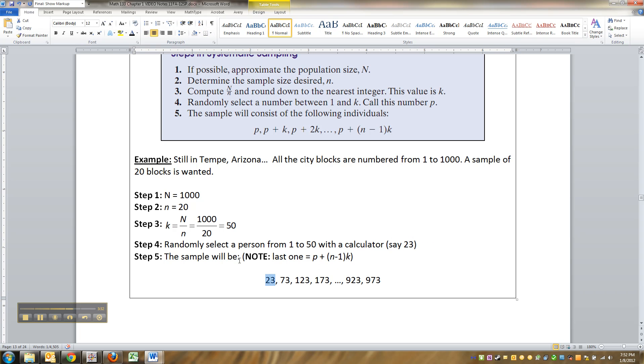So, they start with twenty-three, and then you take twenty-three plus fifty. So, twenty-three plus fifty is seventy-three. Then add on fifty again, and that's one twenty-three. Then add on fifty again, and that's one seventy-three, and so on.